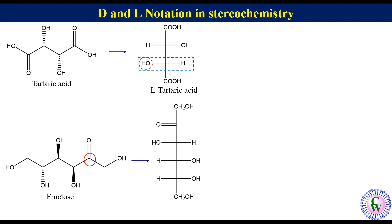Thus the Fischer projection will be like this. Since on the bottom most chiral center the OH is on the right, the configuration will be D and this molecule is D fructose.